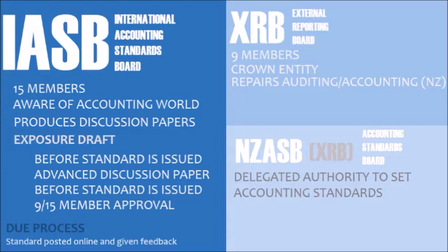In the financial reporting environment, the IASB researches topics and discussion papers are produced. The IASB is meant to be aware of the entire accounting world — there might be a problem with the way something is being reported. The discussion paper provides answers and solutions to these problems. Due process is when they put it on their website and let other people comment on what they think about the solution.